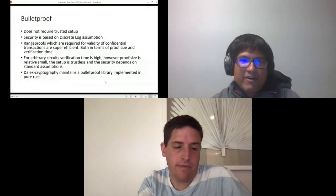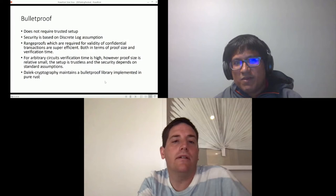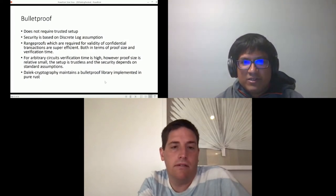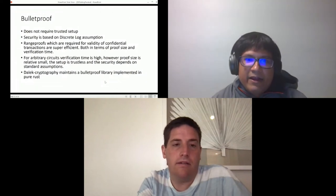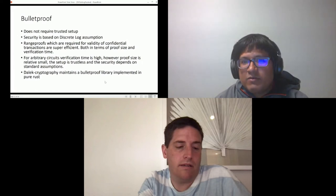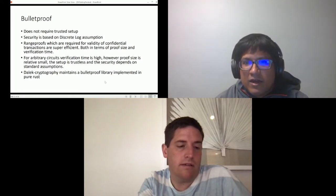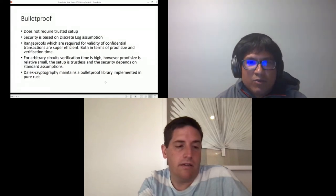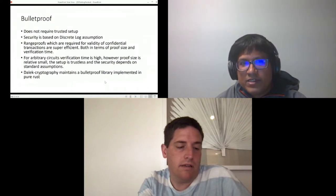However we now have a new advanced proof system called Bulletproofs. The main advantage or selling point is it doesn't require the trusted setup and also the security is based on more standard discrete log based assumption as opposed to very fancy assumptions that are required for libsnark. For range proofs which are required for variety of confidential transactions, they are actually super efficient both in terms of proof size and verification time. However for arbitrary circuits the verification time is high, but the proof size still remains relatively small. The advantage is the setup is untrusted and it depends on standard assumptions. Dalek Cryptography maintains a Bulletproof library that is implemented in pure Rust and actually you also have a Bulletproof implementation in Hyperledger Ursa at present.